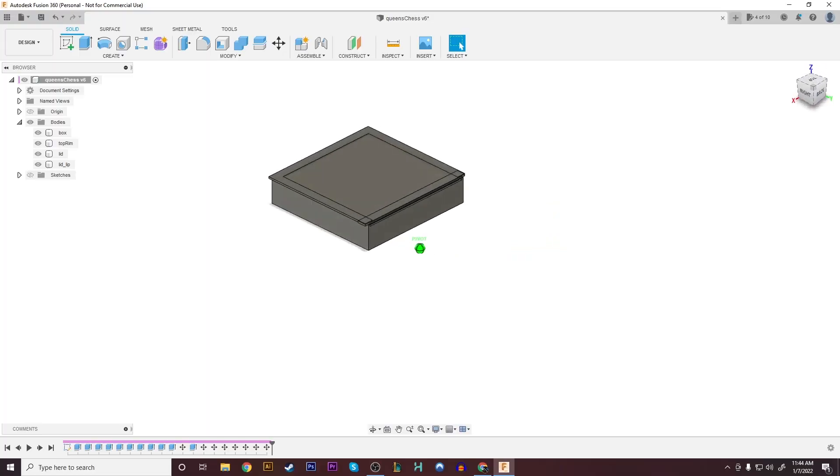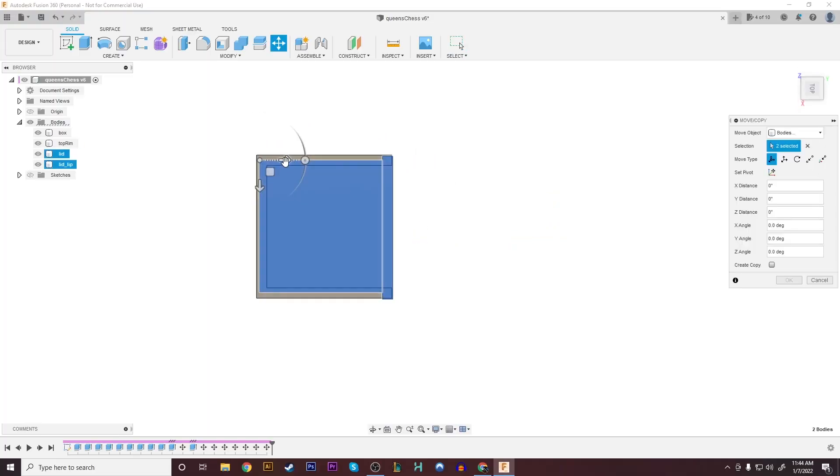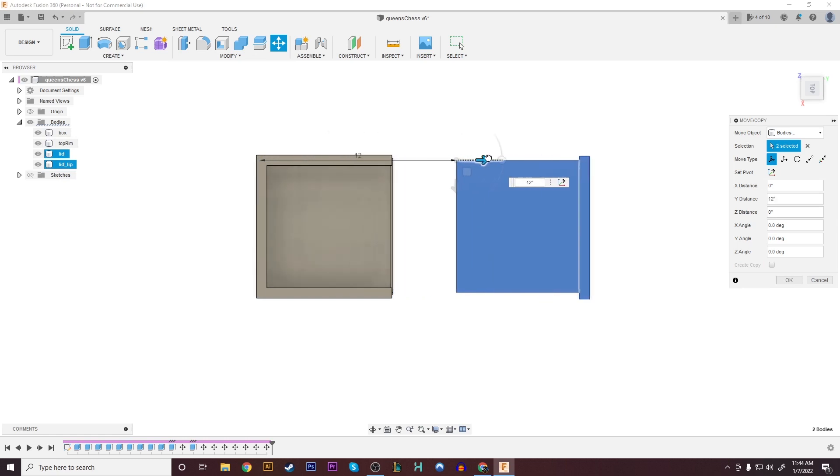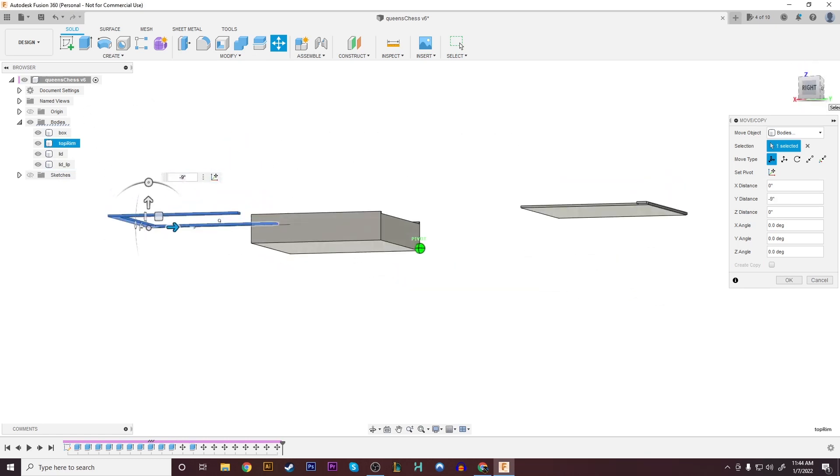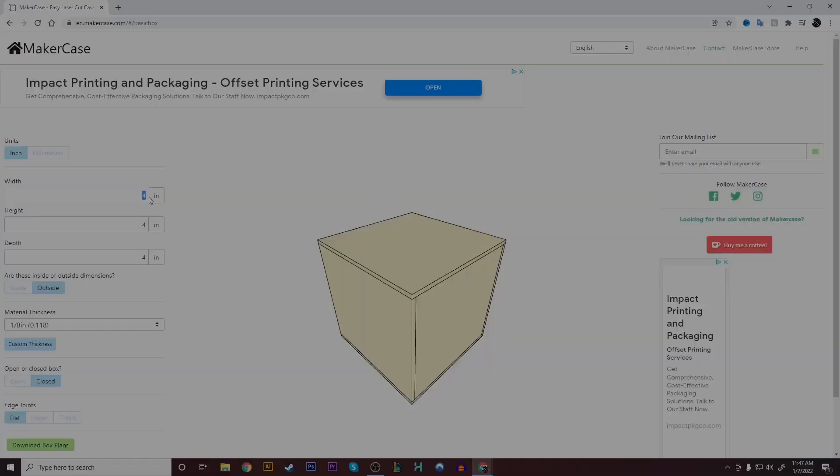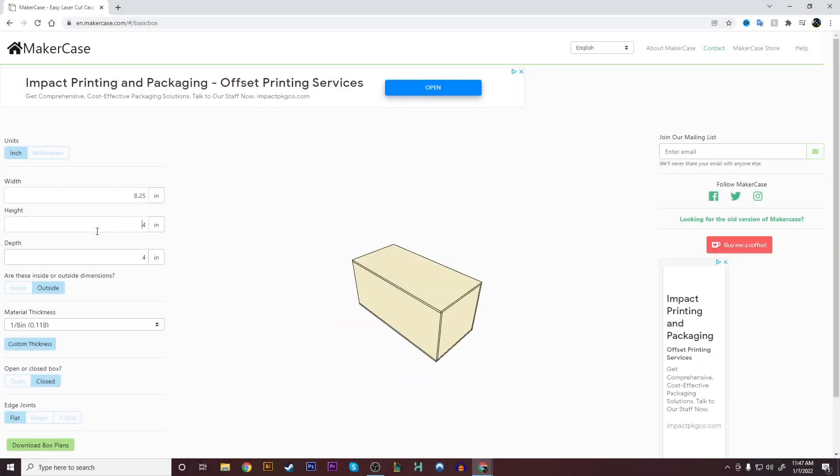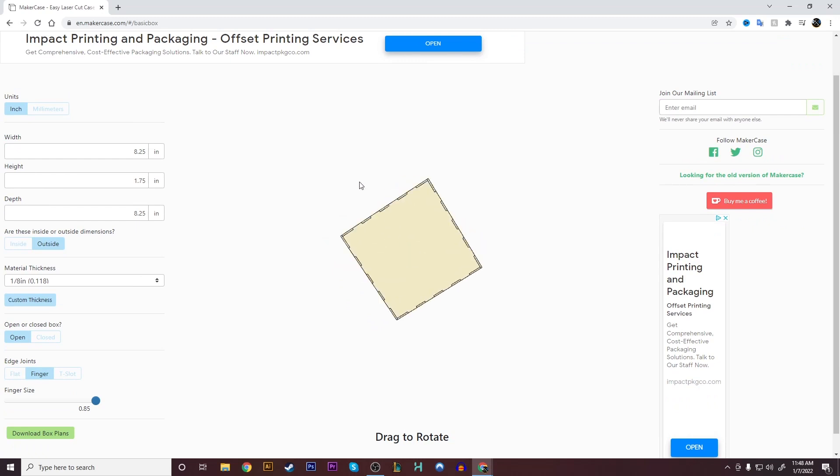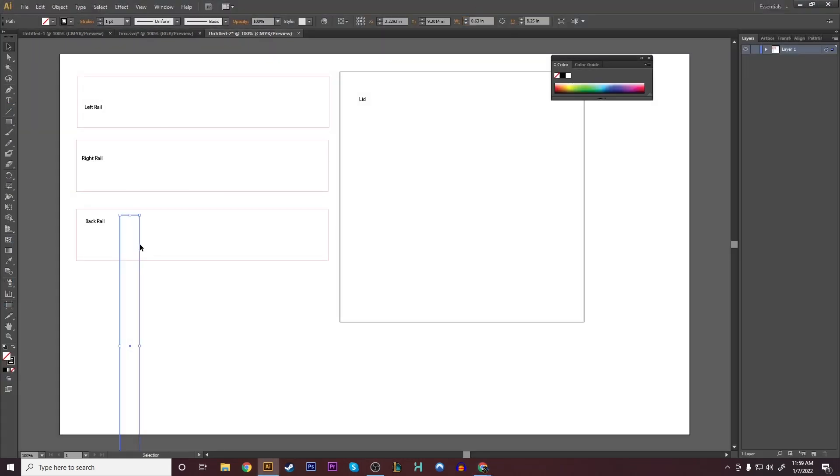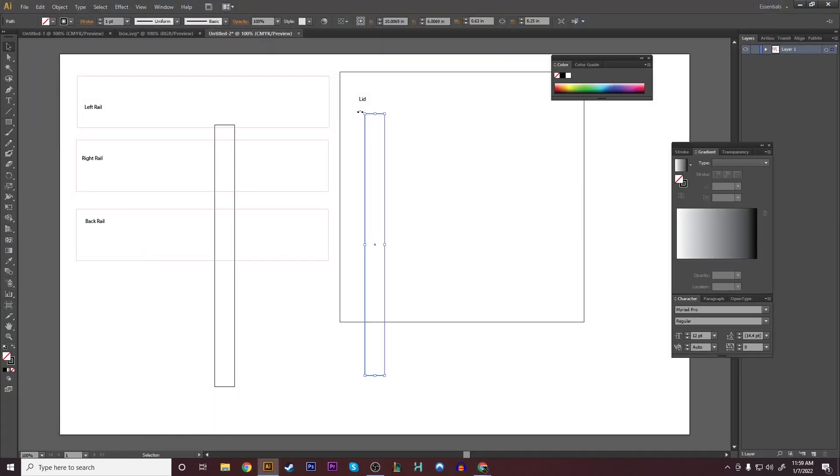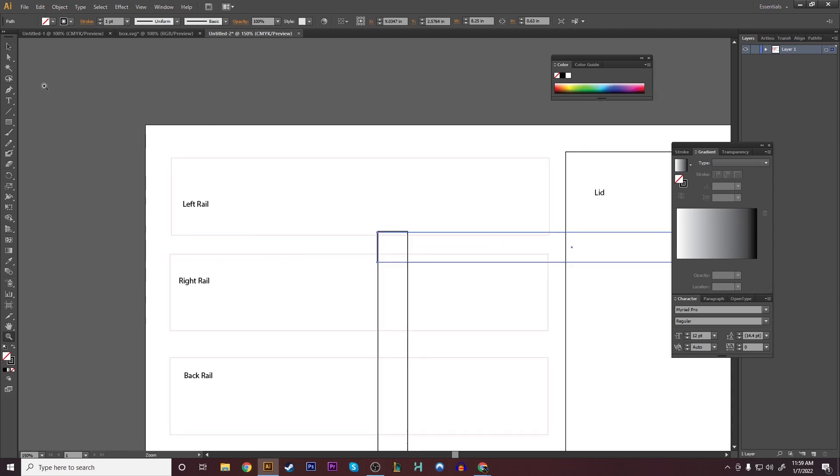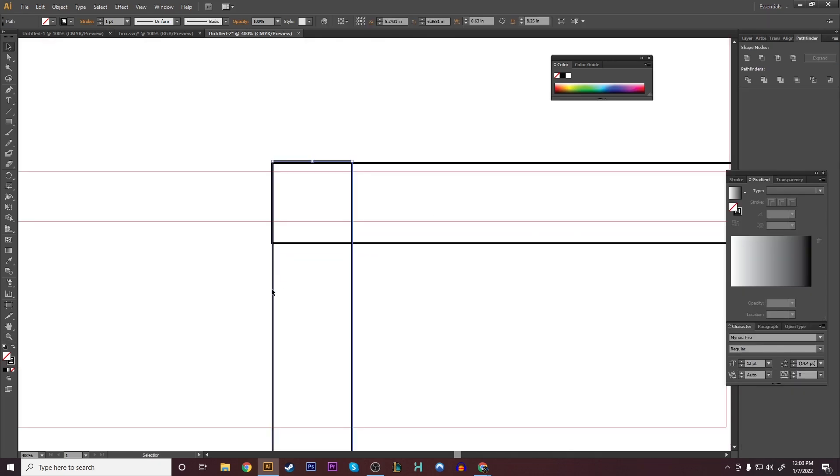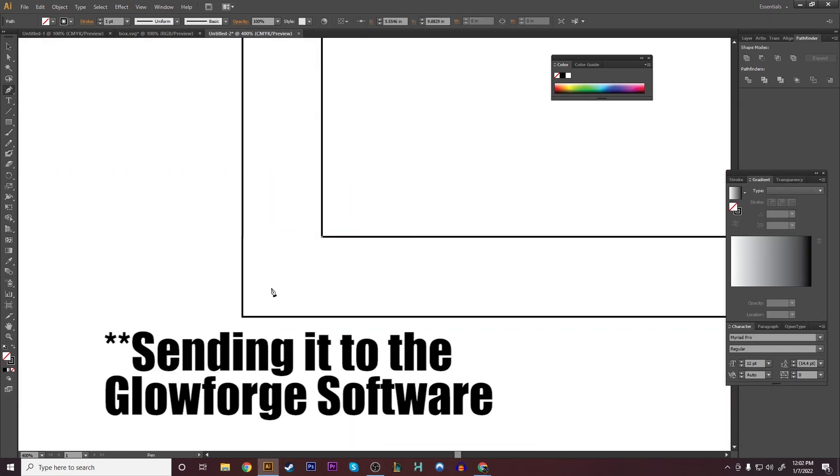To start the design of this project, I'm first modeling it up in Fusion 360 so we have a three-dimensional model and can take a look at how it looks in three-dimensional space to make sure that I have all my components set up properly. From there I'll pull out the measurements and I'm going to use this free program Maker Case to create the finger jointed sides of the box. The last part of the design process is bringing everything into Illustrator, finalizing all the dimensions, setting up the boards, and then sending that SVG file.